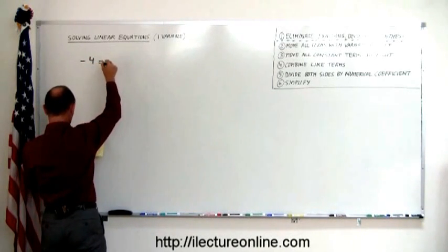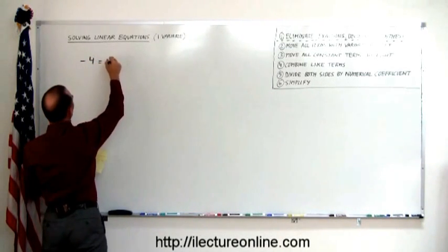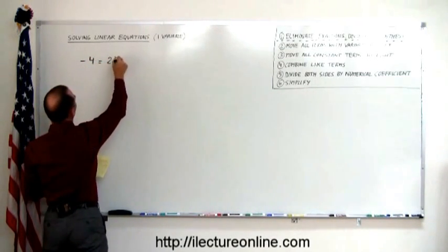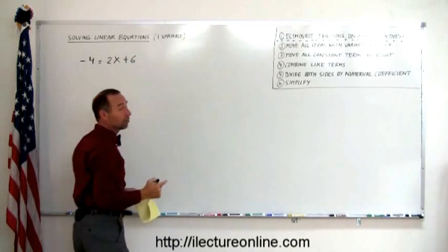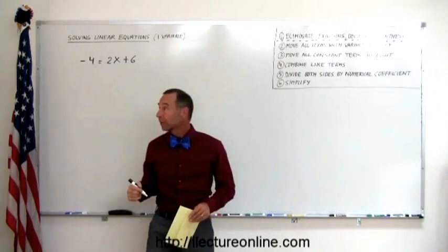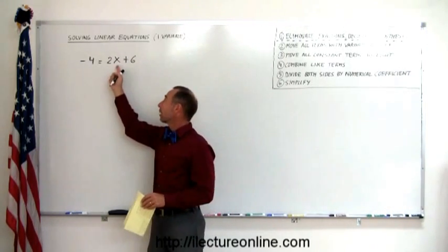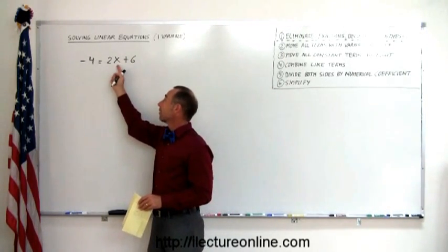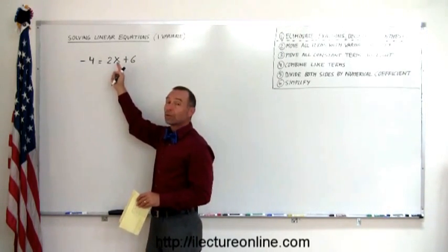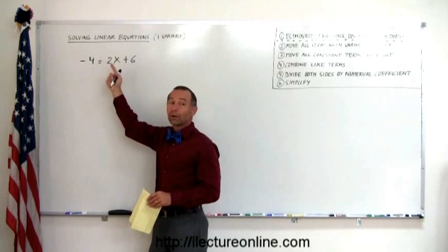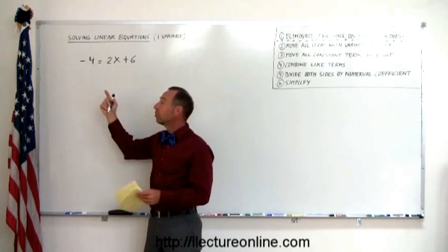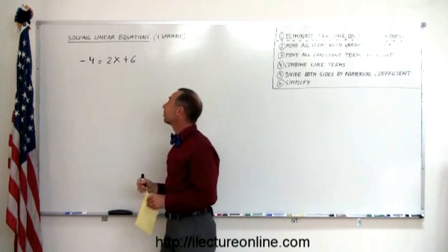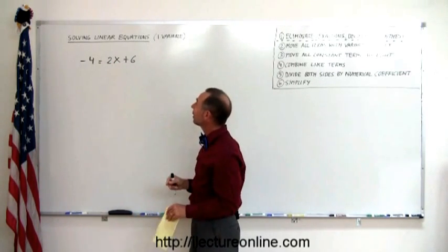We have the equation: minus 4 equals 2x plus 6. It's a linear equation, linear because the variable is not written to a power more than 1. This is not x squared or x cubed — this is simply x — so that makes it linear.